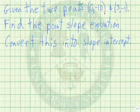We're given two points: 0, negative 10, and 3, negative 1. We want to find the point-slope equation and then convert this into slope-intercept form. What I'd like to do is do this problem two ways.